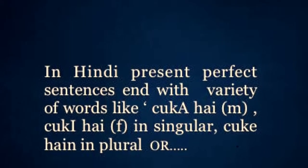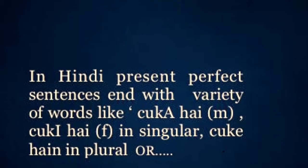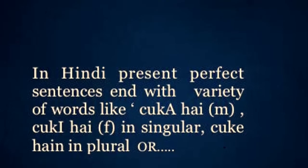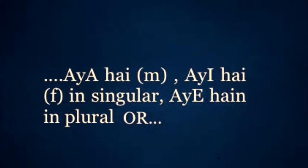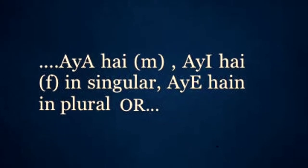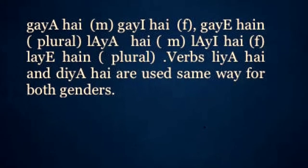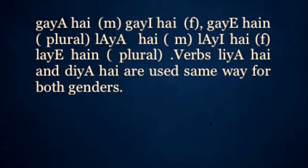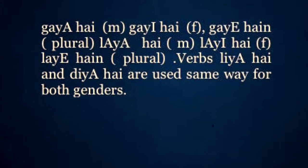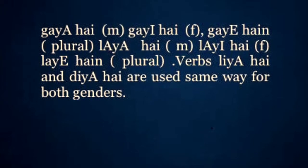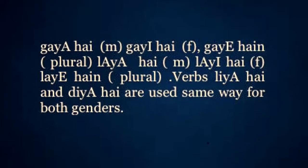In Hindi, present perfect sentences end with a variety of words like chuka hai, chuki hai, chuke hai, aya hai, aai hai, gaya hai, gai hai, laya hai, laai hai. Verbs liya hai and diya hai are used the same way for both genders.